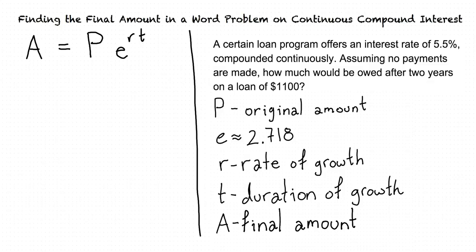Let's identify which numbers in the word problem correspond to which variables in our equation. The problem states that the original amount of the loan was $1,100. So is P equal to $1,100? Right. E is approximately equal to 2.718, and it will always hold this approximate value.